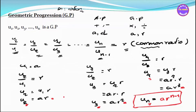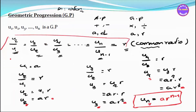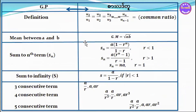So we have the GP definition covered. After the GP definition, we have the GP formula. The GP formula follows from the definition, and the next step covers the full derivation of the GP formula.